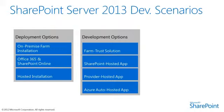A third option is the Auto Hosted App. This option is available for Office 365 SharePoint Online deployments and will in time be available for on-premise as well. These types of solutions are very similar to the Provider Hosted App, except the external components — which consist of the website and optionally a SQL Azure database — are included as part of the app. Office 365 will automatically deploy those components for you: the SQL Azure database and the website to Windows Azure Websites, on your behalf.